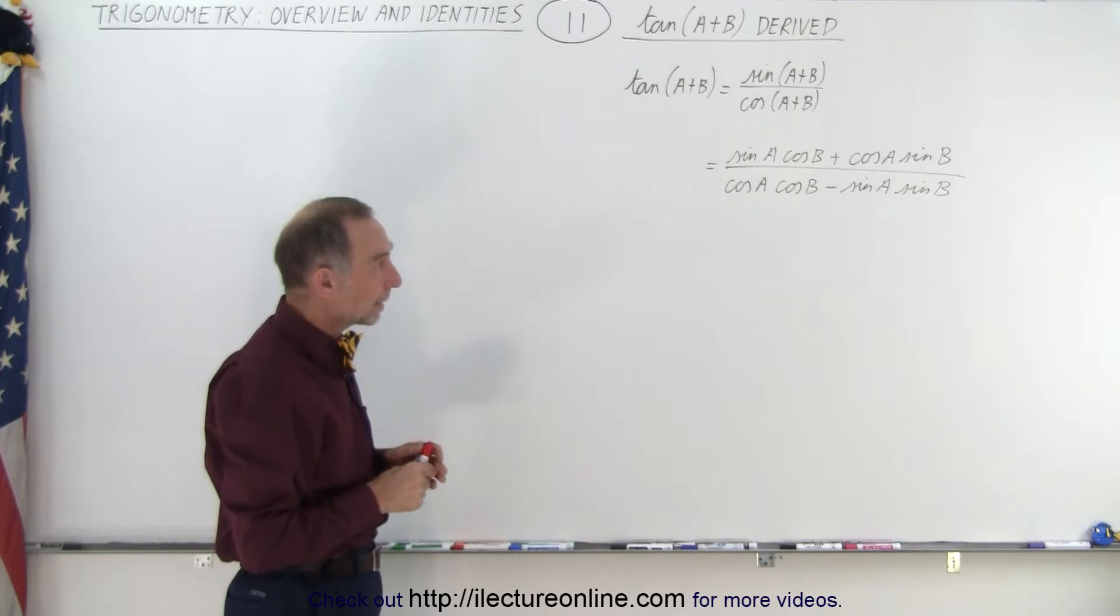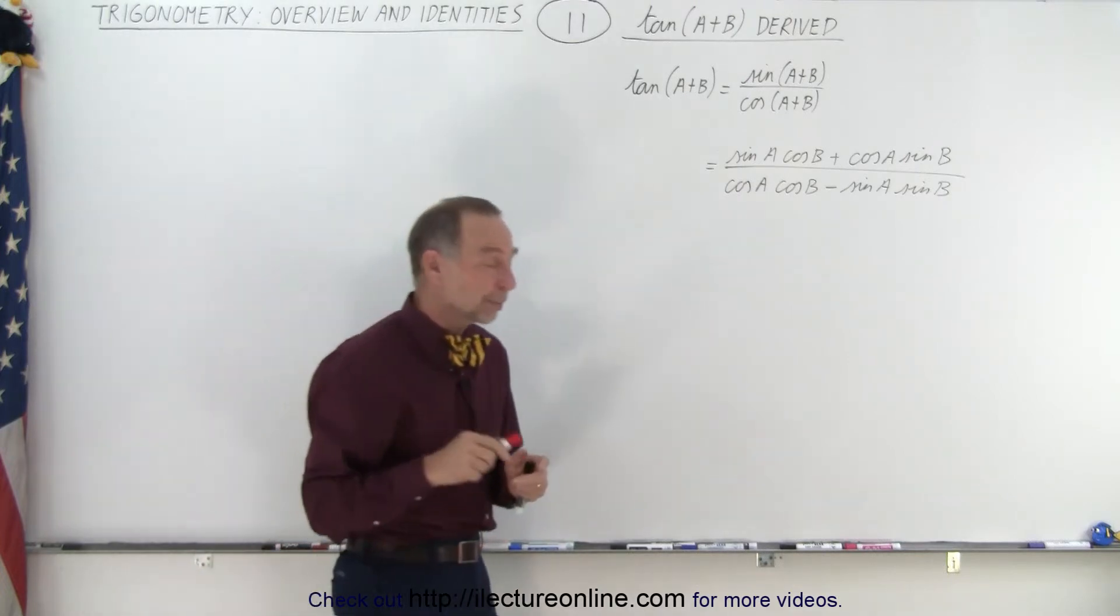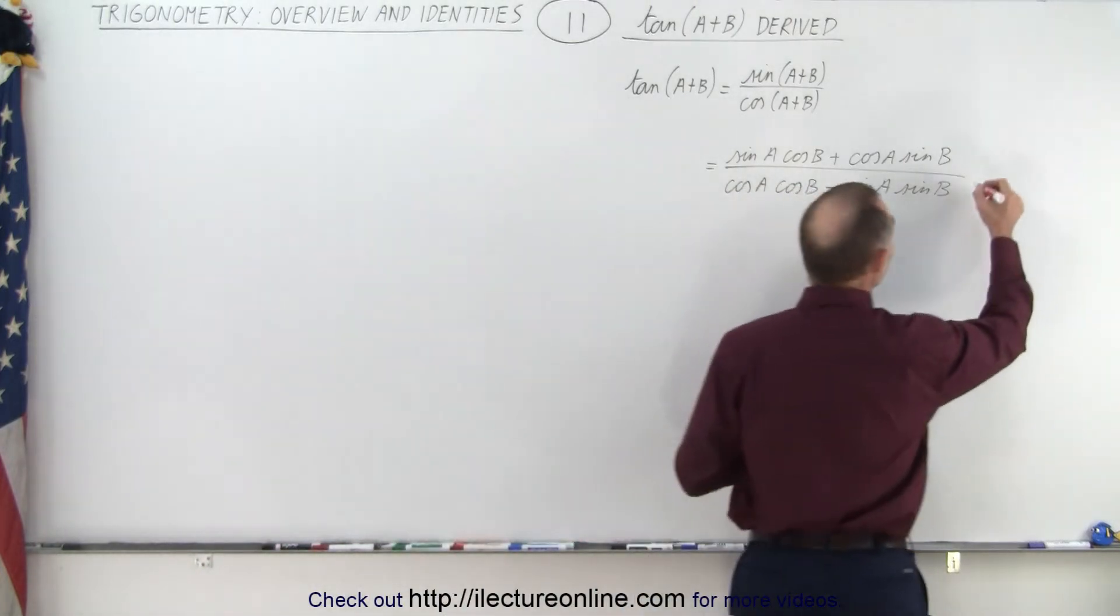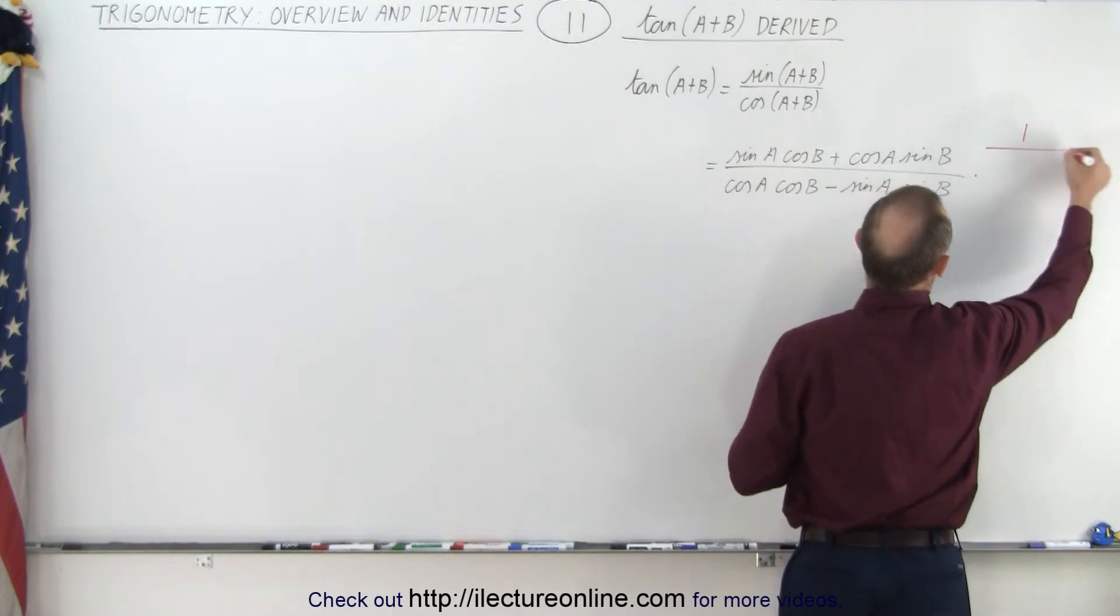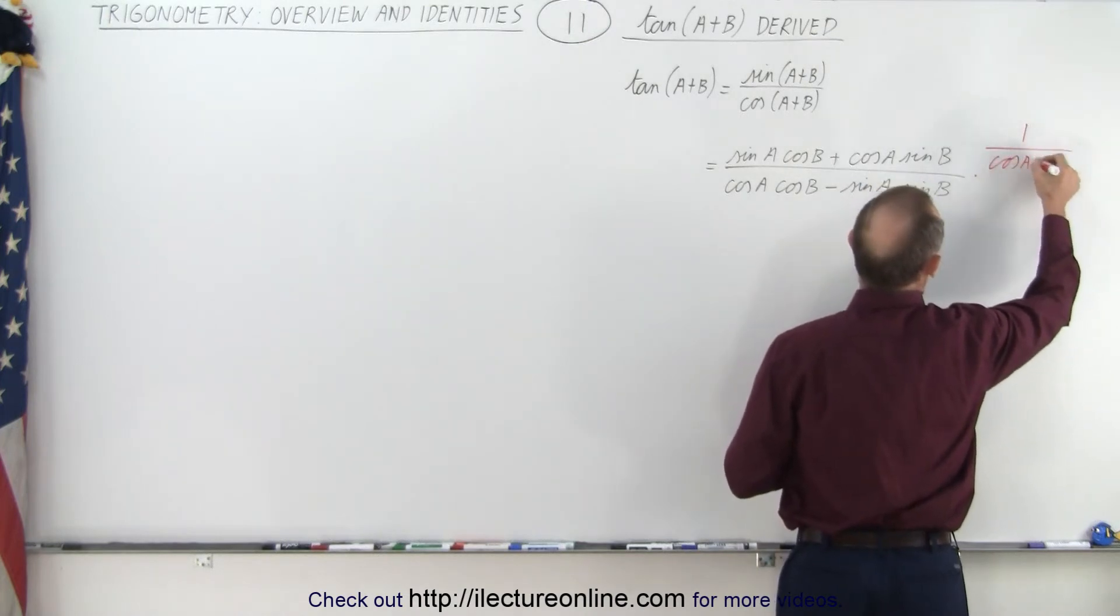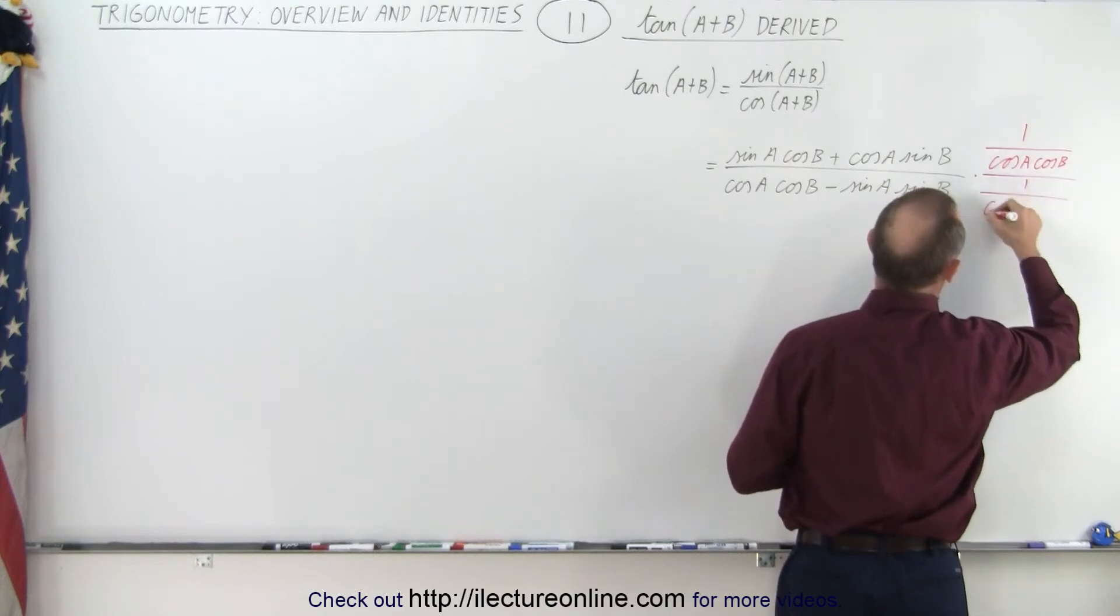But the way you go ahead and simplify this is by multiplying the numerator and the denominator by one over the cosine of A times the cosine of B, divided by one over cosine of A times the cosine of B.